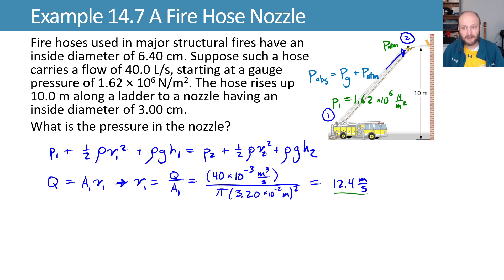We can get v₂ similarly by saying it's Q over A₂. It's a similar expression, but now with an r₂ that's different from our problem statement here. What does it say? We had an inside diameter of 6.4 centimeters, which gave us 3.2 for the radius. And then this one is 3 centimeters, so that'll be 1.5 centimeters for the radius,